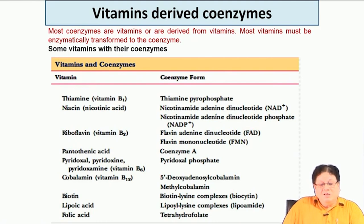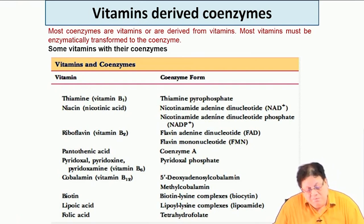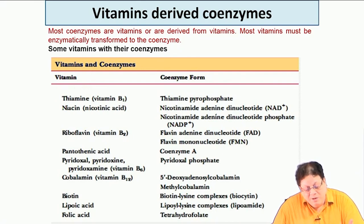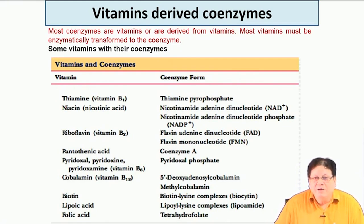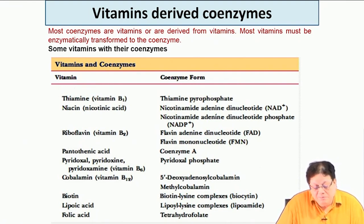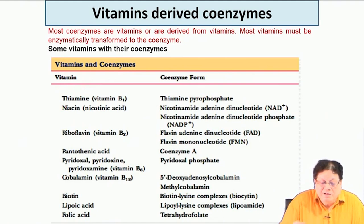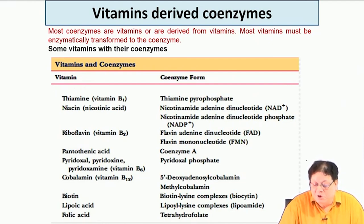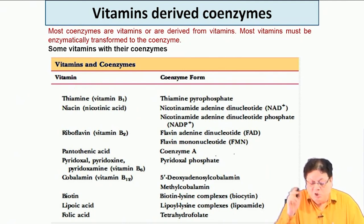Among the B vitamins are: thiamine (B1), niacin, riboflavin, pantothenic acid, pyridoxal, cobalamin, biotin, lipoic acid, and folic acid. Each vitamin must be converted to an active coenzyme form — for example, thiamine is converted into thiamine pyrophosphate, and niacin is converted into NAD+ or NADP+.